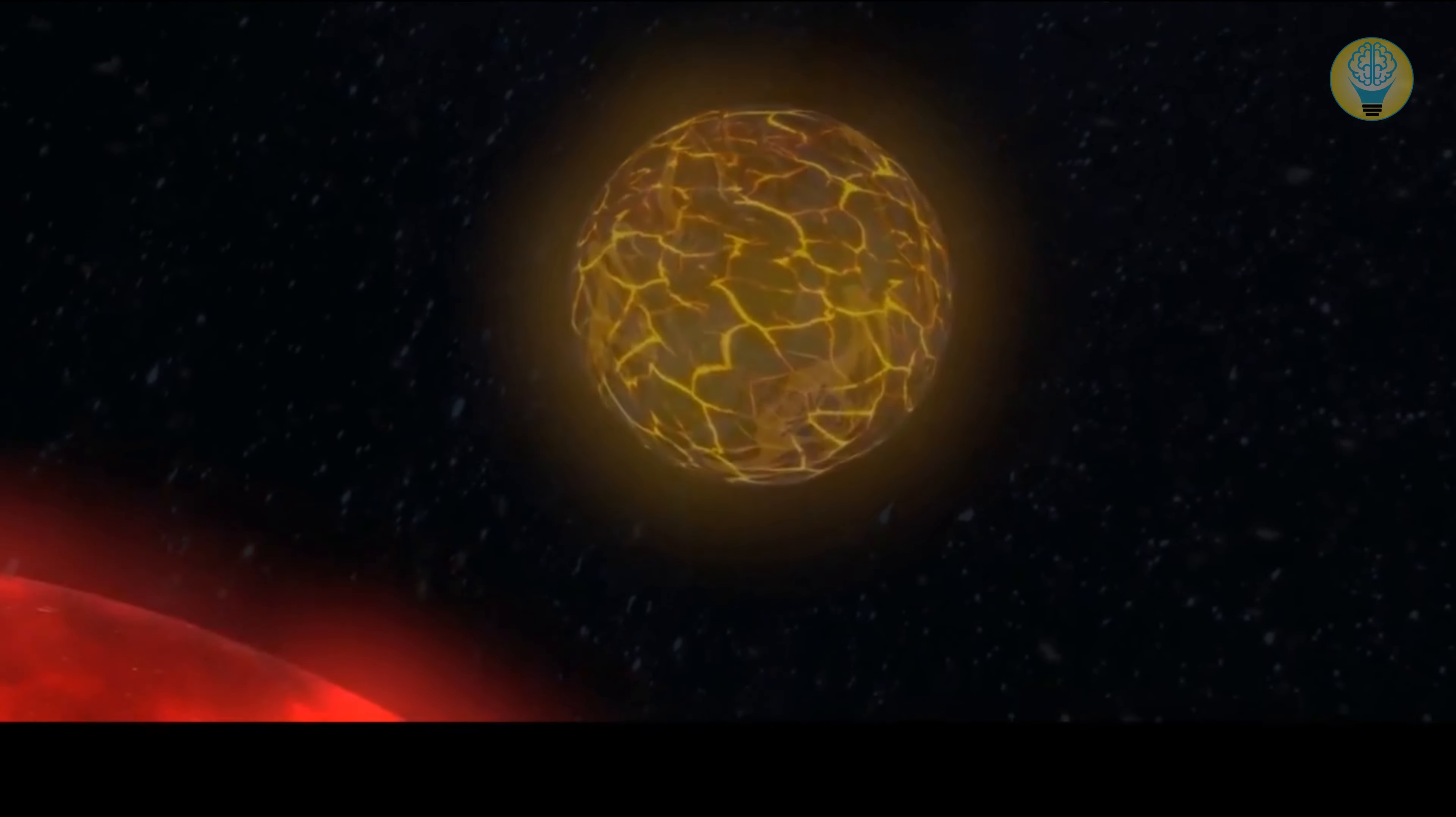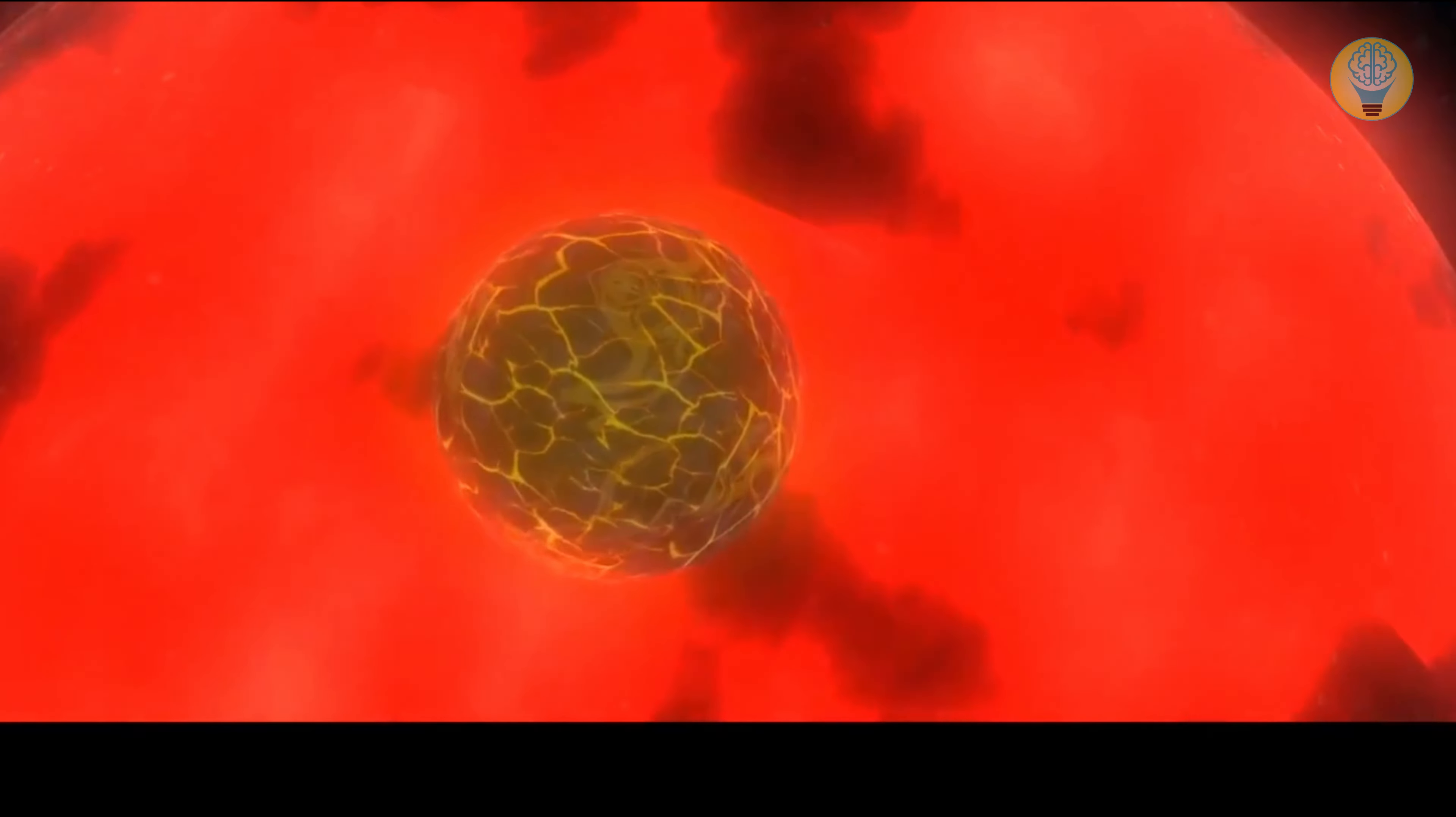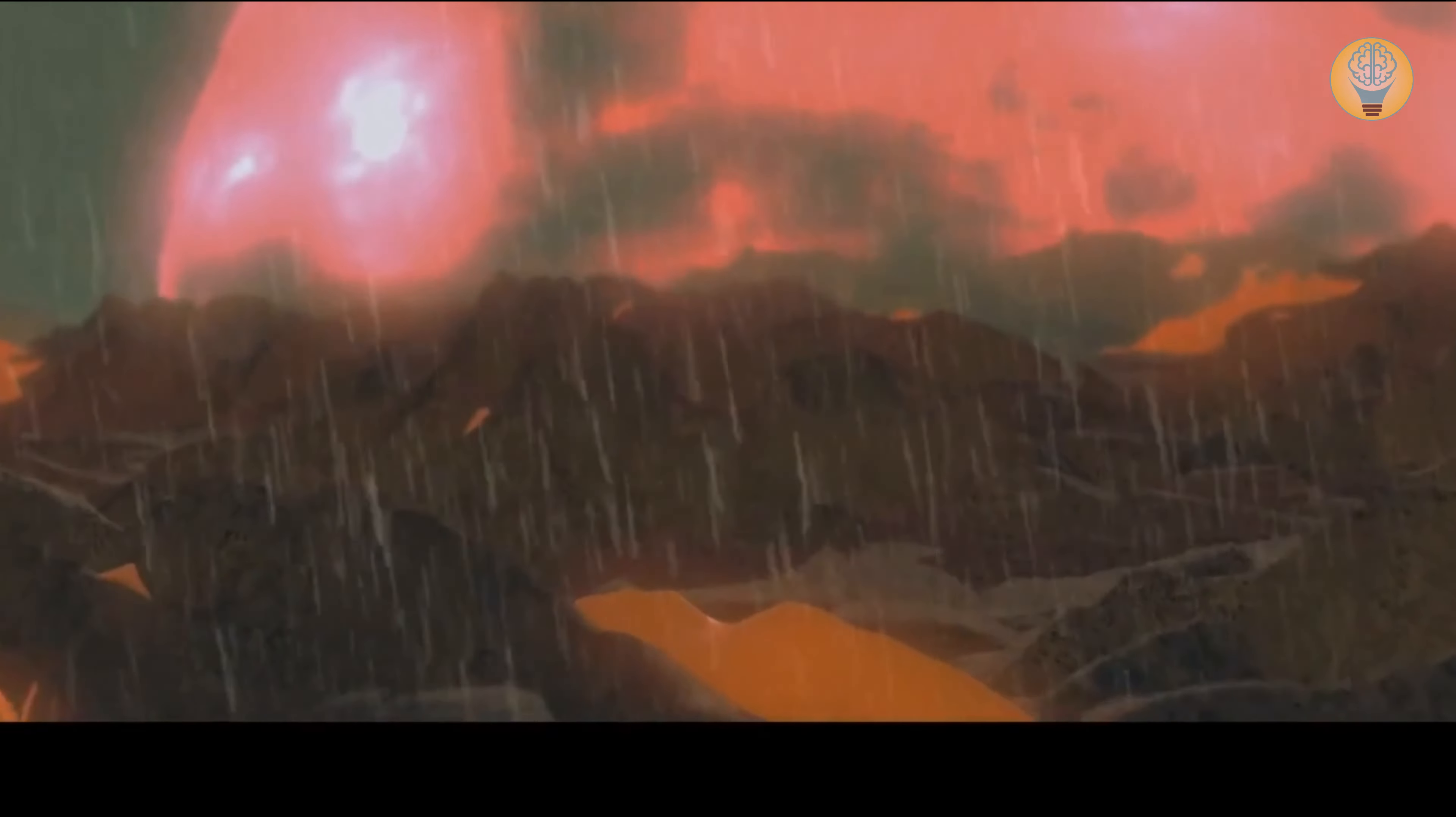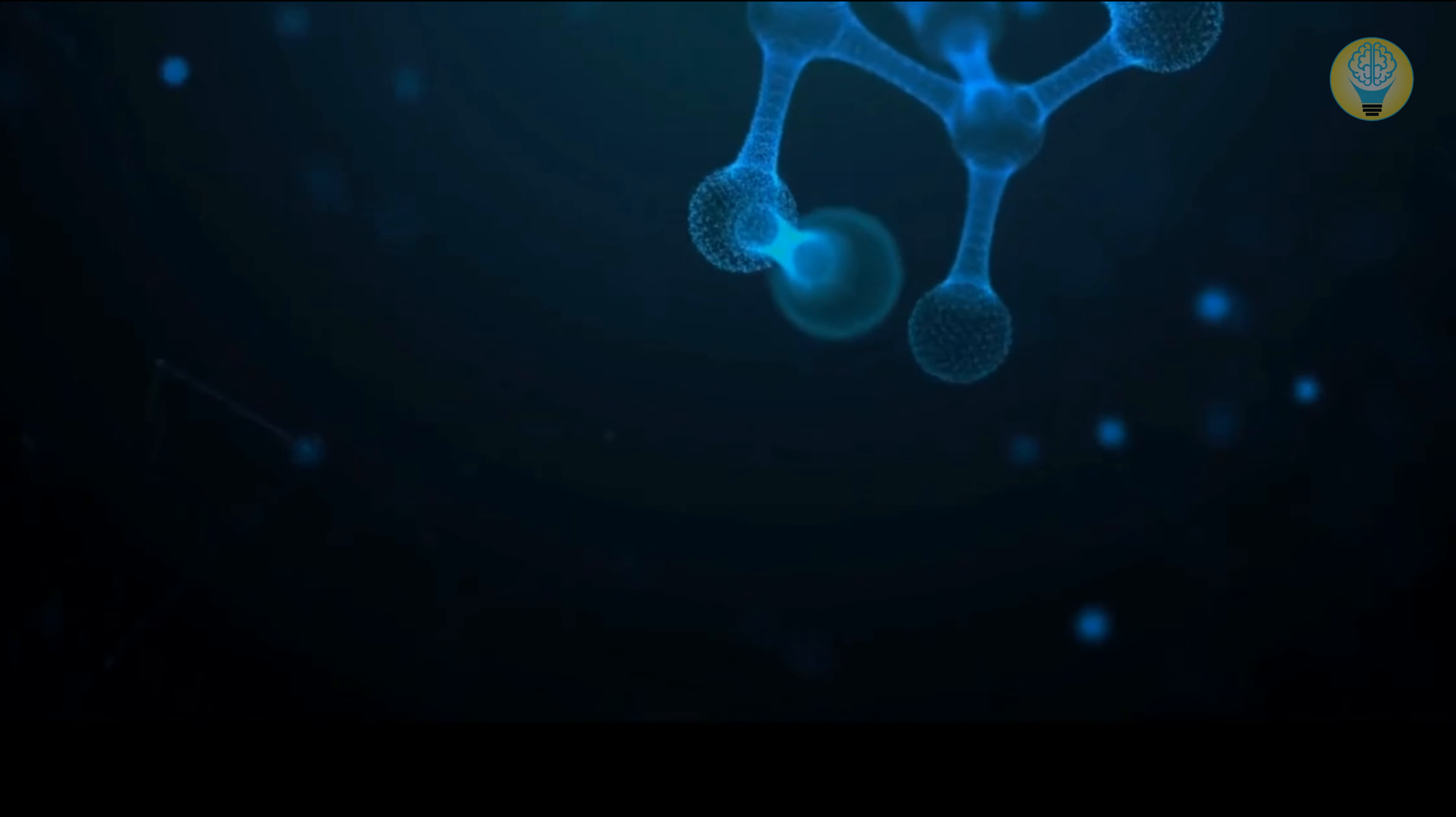These planets are basically like giant balls of fire, with one side facing the star, cooking at temperatures hot enough to vaporize iron and other metals. But as the hot iron vapor is blown into the planet's cooler nightside, it turns into liquid and falls as iron rain. And these planets held a special prize for us.